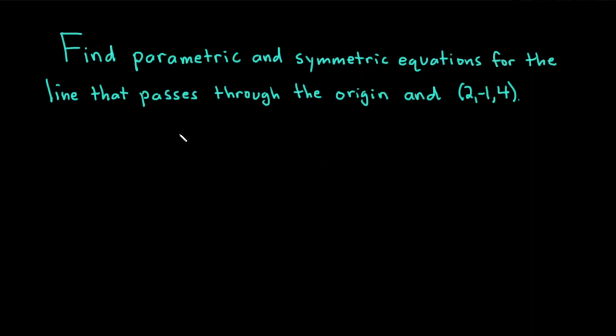Find parametric and symmetric equations for the line that passes through the origin and the point (2,1,4). Let's carefully work through this example solution. To find the equation of a line in space you need a point on the line and a parallel vector.